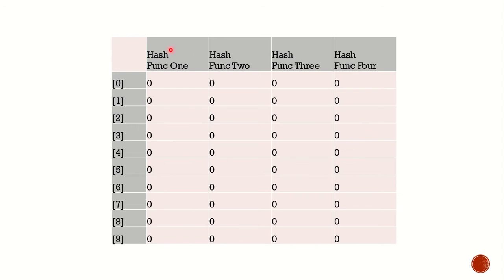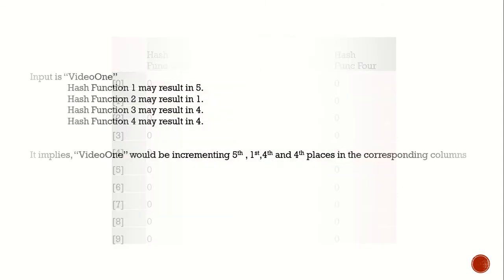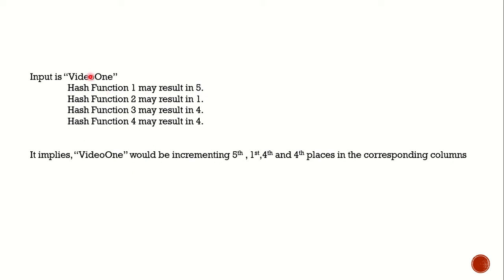Initially the matrix looks like this: we have four rows corresponding to the four hash functions — hash function 1, hash function 2, hash function 3, and hash function 4 — and each hash function can produce a number between 0 and 9. This is the data structure used to store the counts of all videos. Our first video is video 1. Hash function 1 gives us 5, hash function 2 gives us 1, hash function 3 gives us 4, and hash function 4 gives us 4.